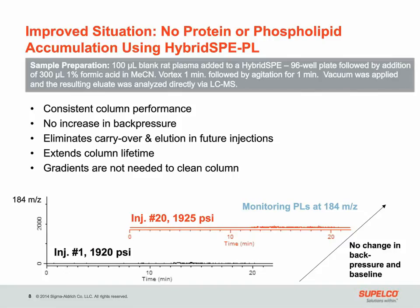So how can we fix this? Following a standard sample prep using the hybrid SPE phospholipid 96-well plate, you can see there is no increase in back pressure and no carryover of phospholipids, eliminating the need for the cleaning gradient at the end of each run. The initial back pressure is 1,920 PSI, and it only increases to 1,925 PSI after 20 injections. There is little, if any, increase in the background baseline.